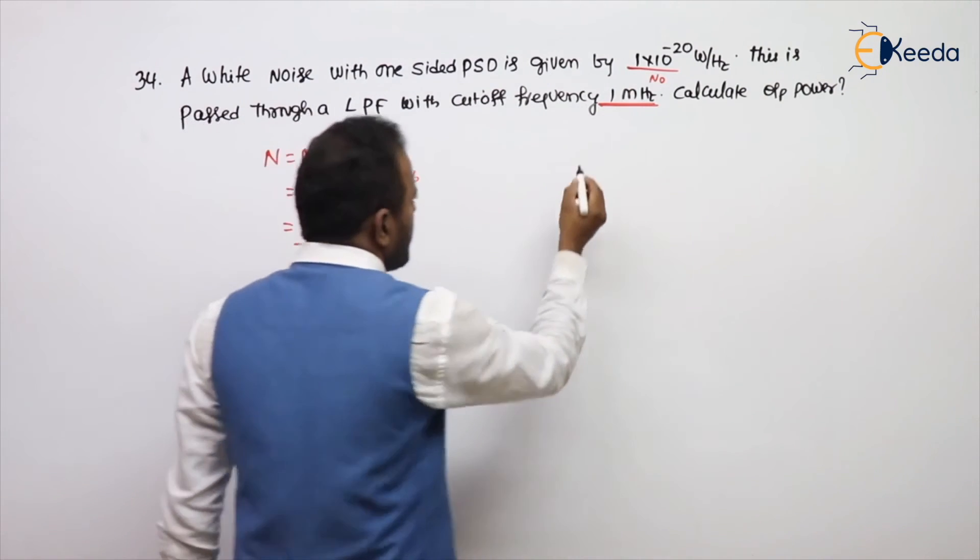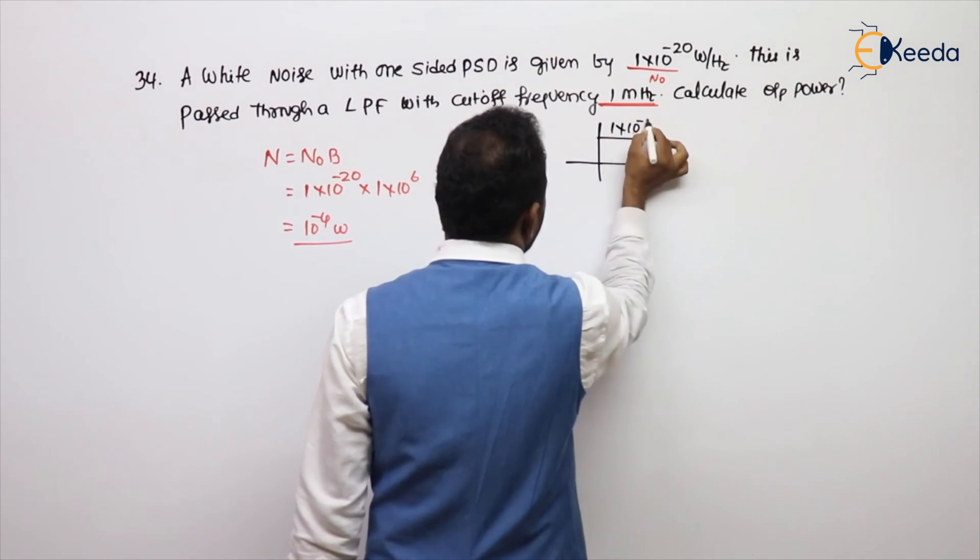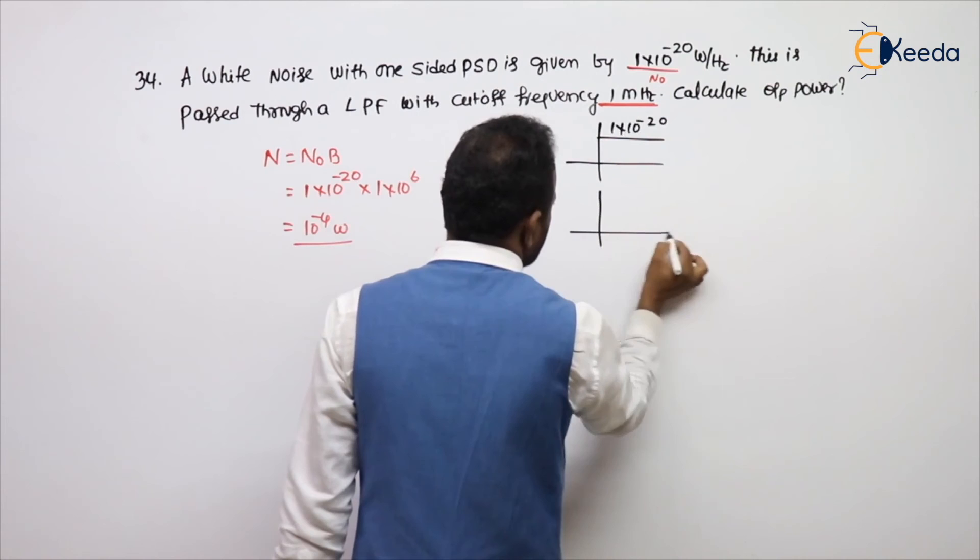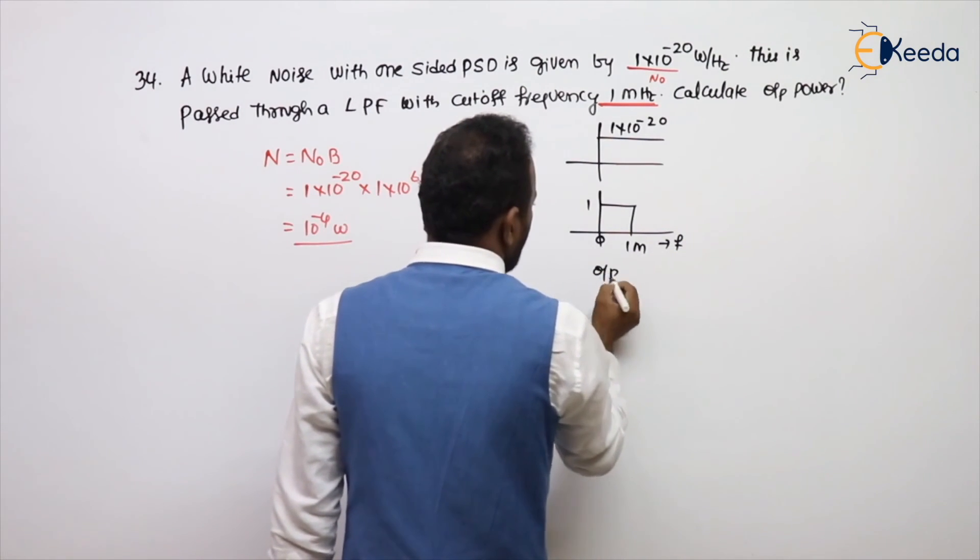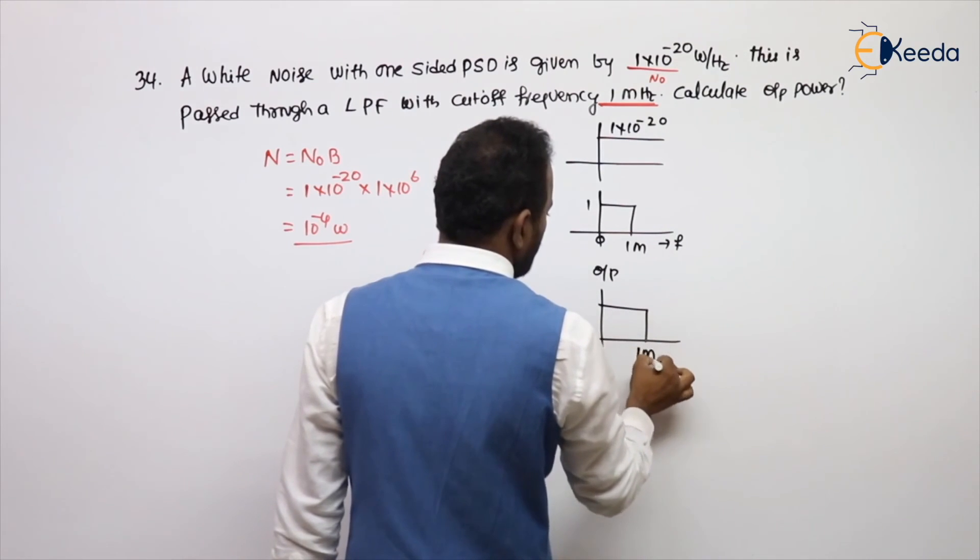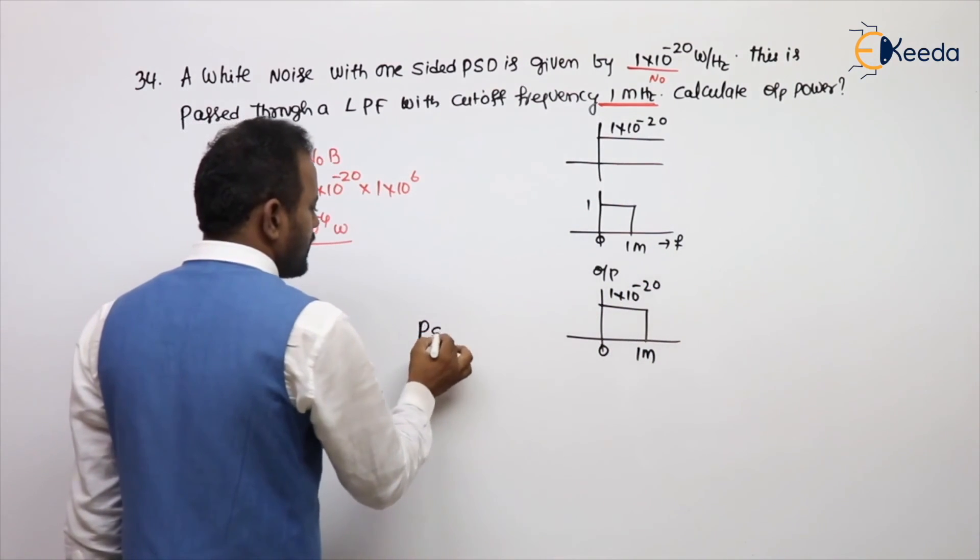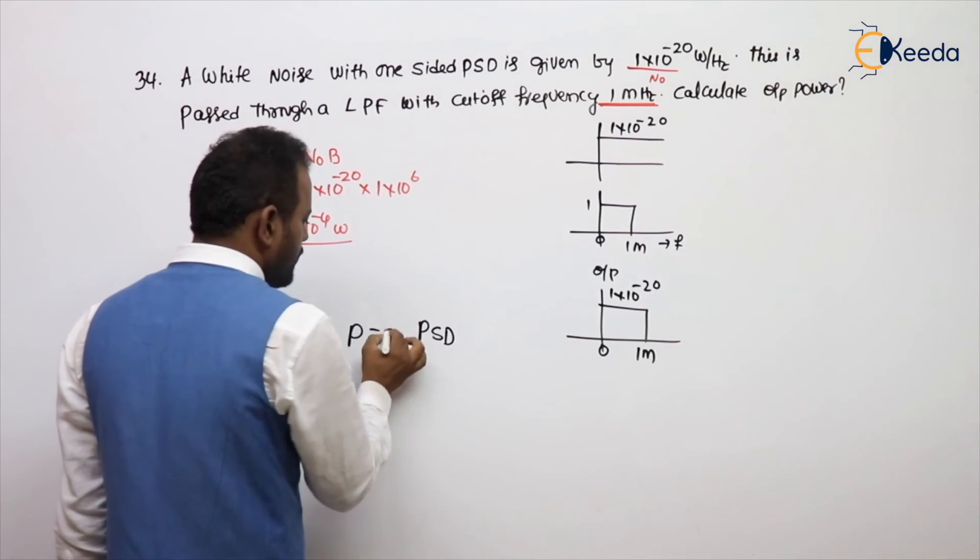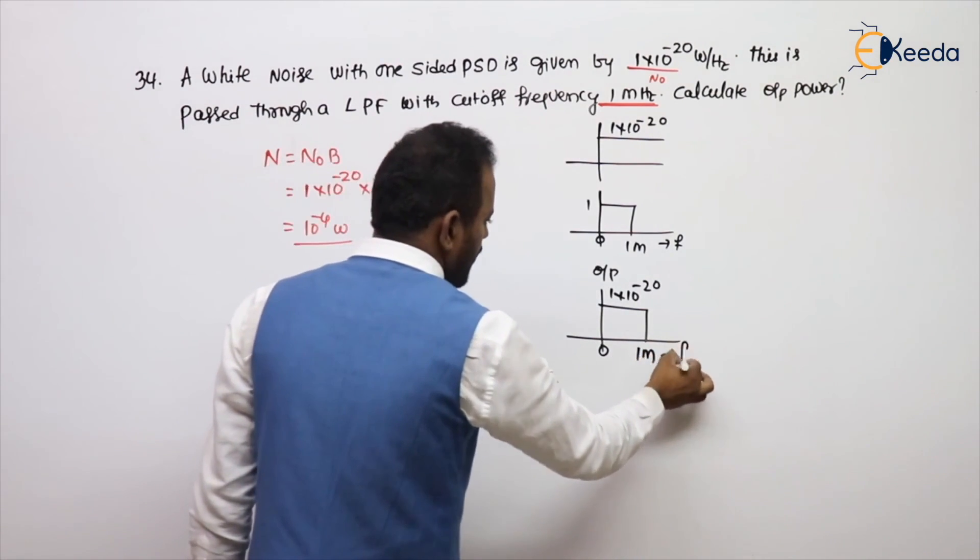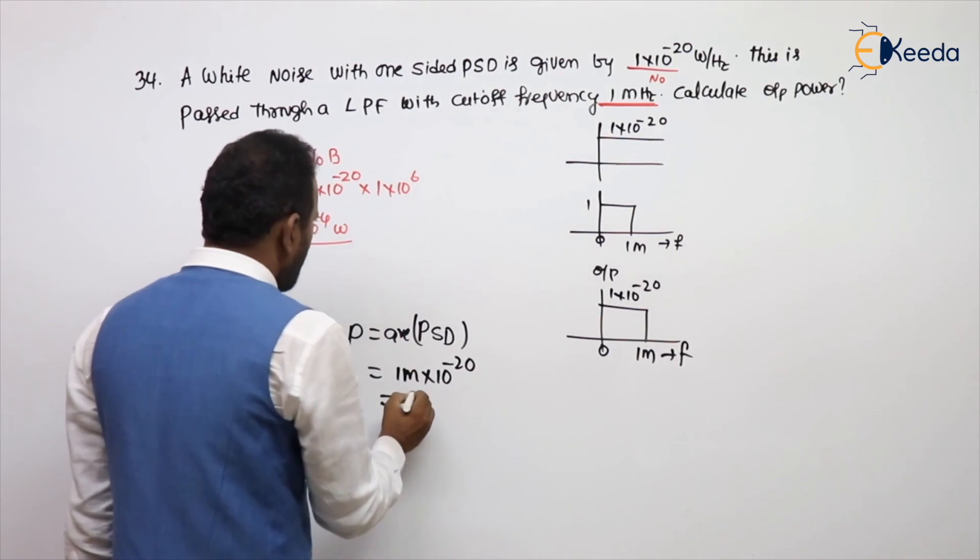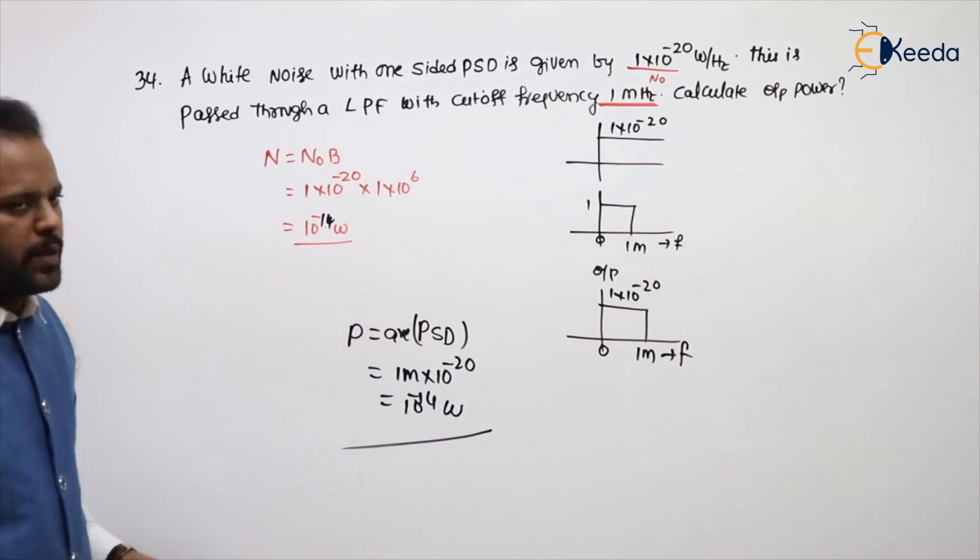Or what is the another version? He given one-sided PSD, 1 into 10 power minus 20. This is passed through a low-pass filter. What is the cutoff frequency? 1 MHz. Nothing is given means pass band is 1. Output power spectral density is passing from 0 to 1 MHz, so what is this value? 1 into 10 power minus 20. What is the power? Area under the PSD. Power is nothing but area under PSD. Area is 1 MHz into 10 power minus 20. So 10 power minus 14 watts. Simple problems are quite nice.